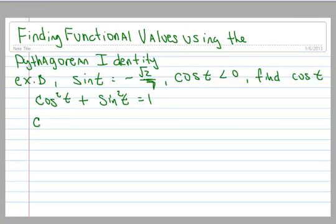Okay, so we don't know the cosine of T, but we do know the sine of T, so we're going to substitute that in. Negative square root of 2 over 7. That whole sine of T is squared. So let's go ahead and square that out.